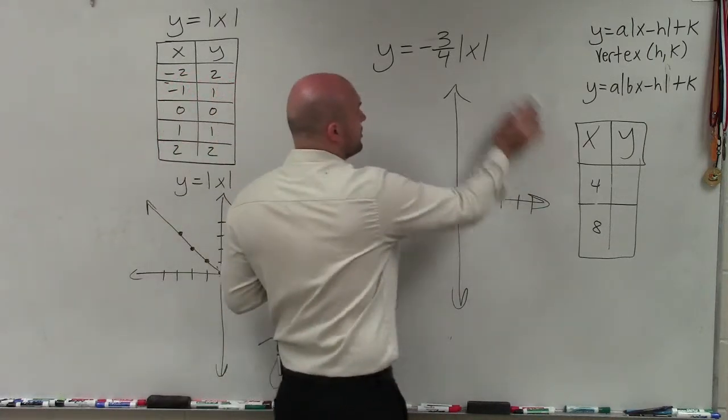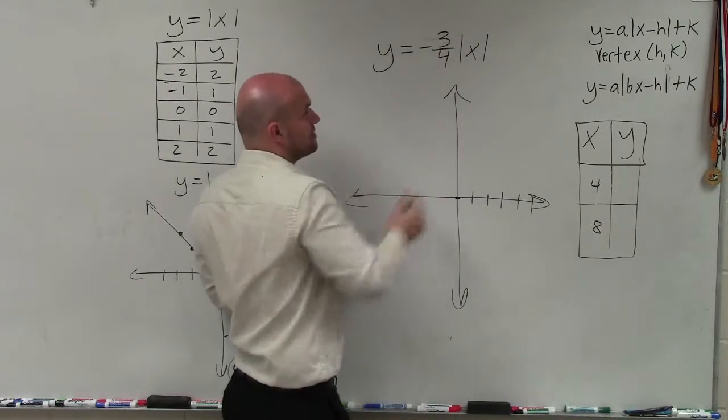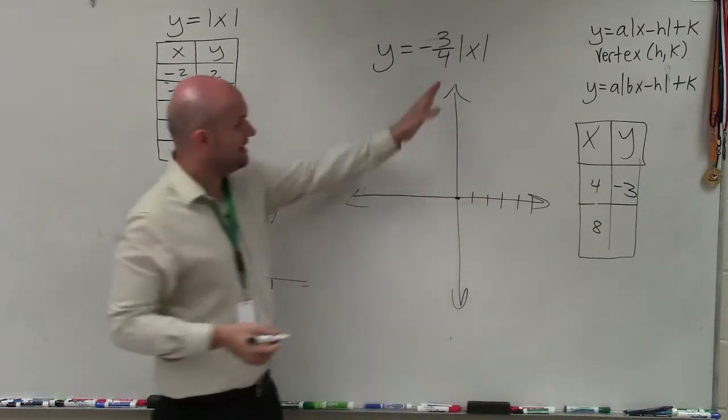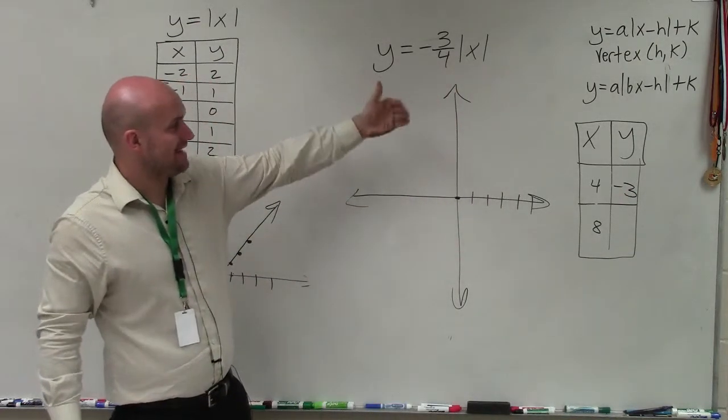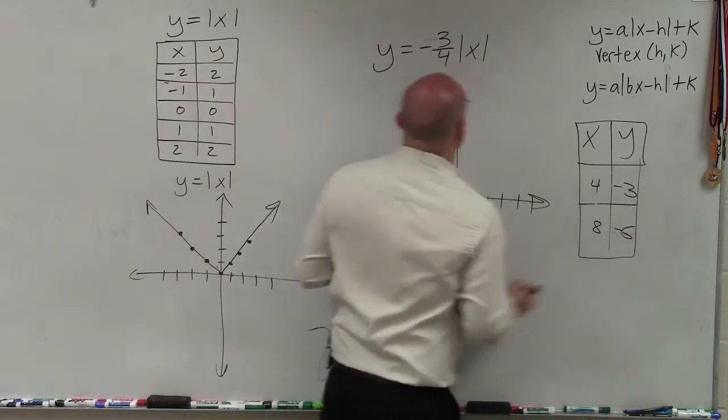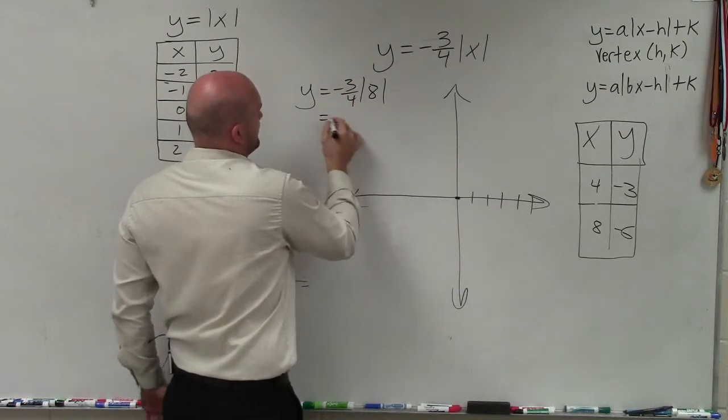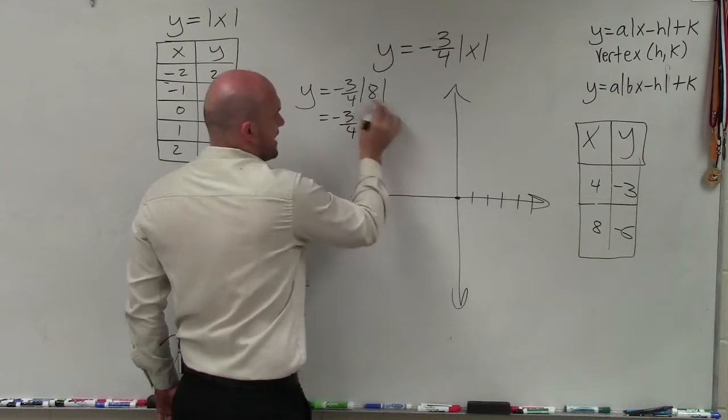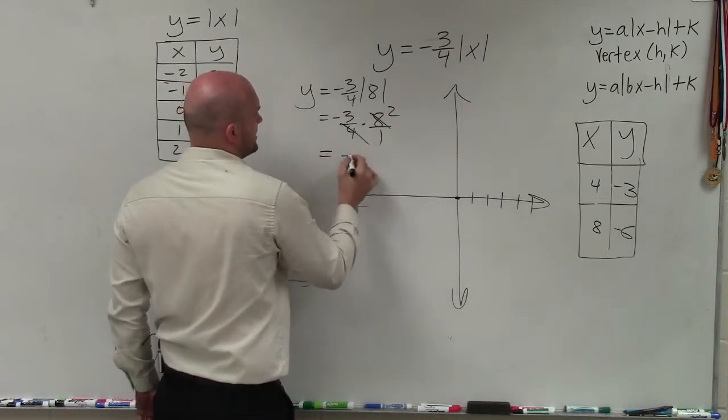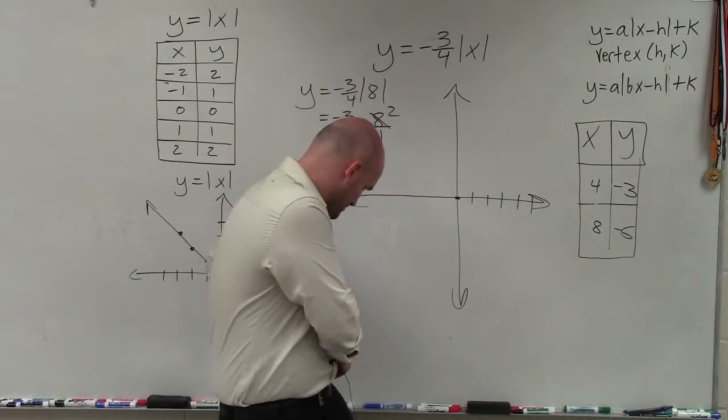So when I plug 4 into this equation, I have absolute value of 4, which is 4. 4 times negative three-fourths. The 4s will divide out, and I'm left with negative 3. When I plug 8 in for x, the absolute value of 8 is 8. 8 divided by 4 is 2. 2 times negative 3 is negative 6. You do the same thing for 4.